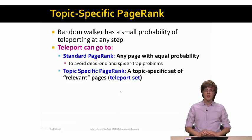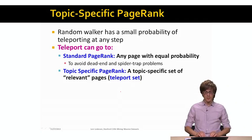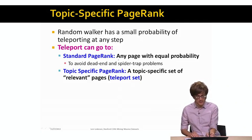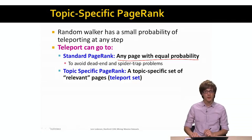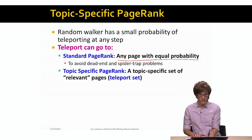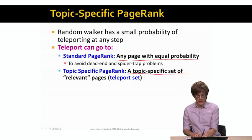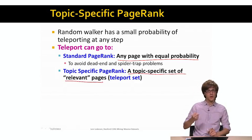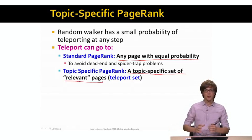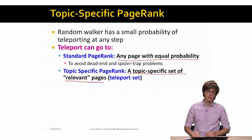What we can do now is change this random teleportation part a bit. In the original PageRank formulation, the random walker can land at any page with equal probability. What we do in the personalized PageRank world is we say the random walker can teleport only to a topic-specific set of relevant pages. Whenever a random walker decides to jump, they don't jump to any page on the web, but only to a small subset of pages. This subset of pages is called the teleport set.